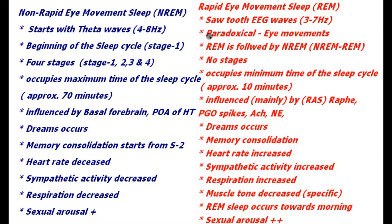REM sleep is also known as paradoxical sleep because the EEG behavior as well as the eye movement is very rapid in this stage, appearing as if the person is in an awakened state. In fact, the sensory threshold for arousal is very high in this stage. The EEG waves and eye movement appear as if the person is awake or in a very light stage of sleep, but the person is actually in a very deep stage of sleep — that is why it is named paradoxical sleep.